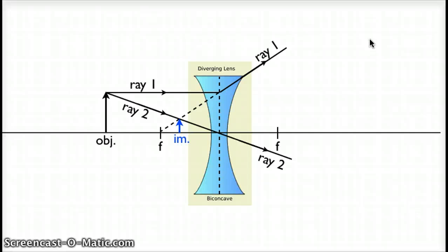Let me throw up a couple of labels just so we know everything we're talking about. So ray one in and bent up, ray two doesn't bend at all. And here's our image at the intersection between ray two and the traced back part of ray number one.